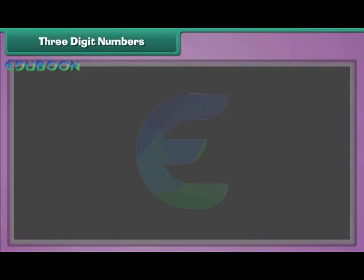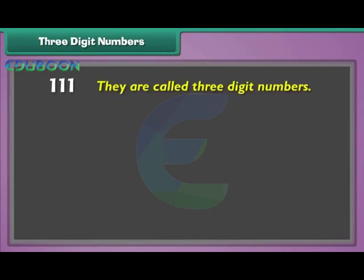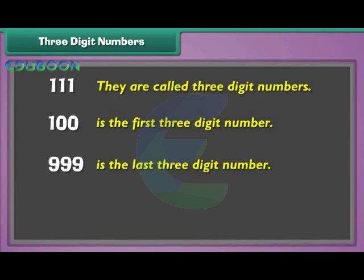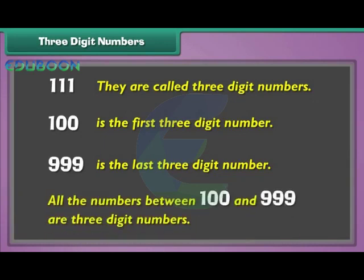Three-digit numbers. Numbers that have three digits in them are called three-digit numbers. Hundred is the first three-digit number — it is the smallest three-digit number. Nine-hundred and ninety-nine is the last three-digit number; therefore, it is the largest three-digit number. All numbers between one hundred and nine-hundred and ninety-nine are three-digit numbers.